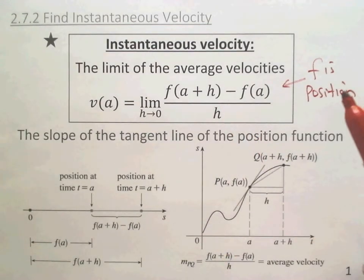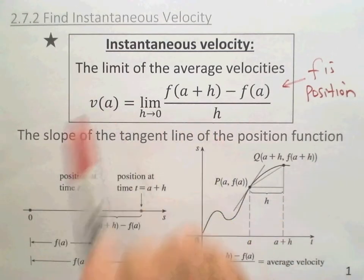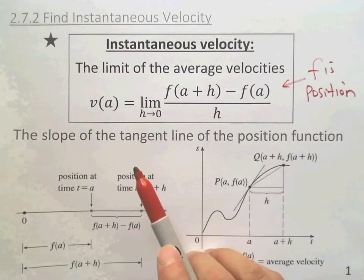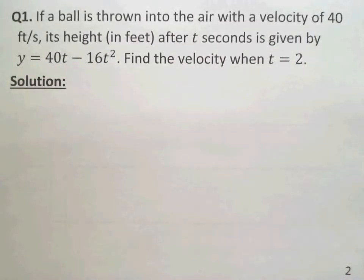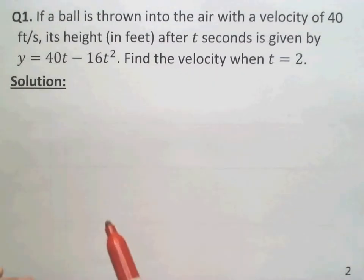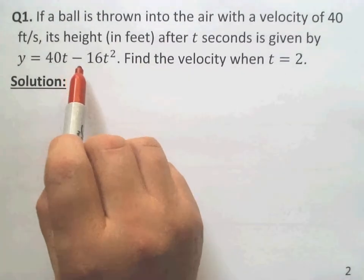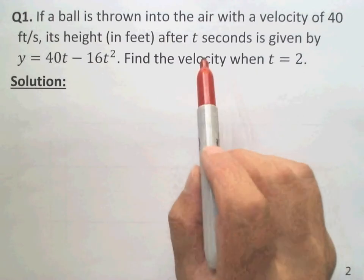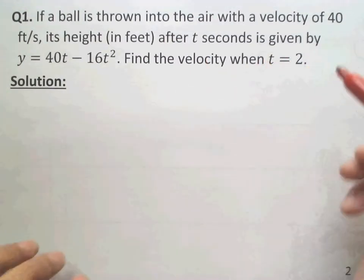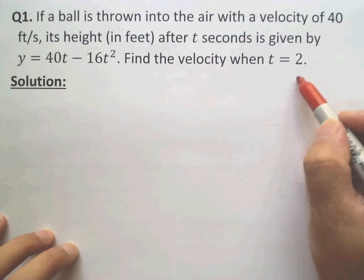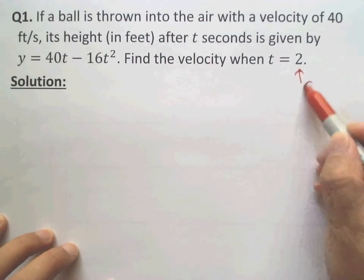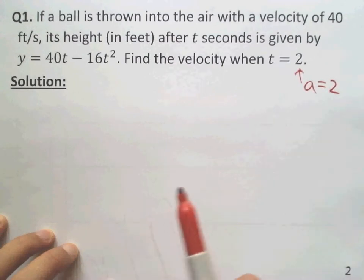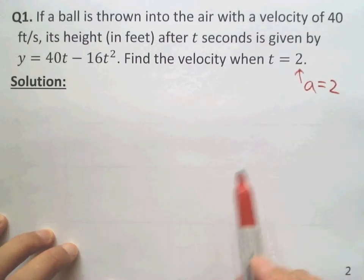So how to use this formula to directly find the instantaneous velocity? Let's look at one question. Here's the position function, and the question is to find the velocity at time t equals 2. So a equals 2. We need to find the instantaneous velocity at t equals 2.